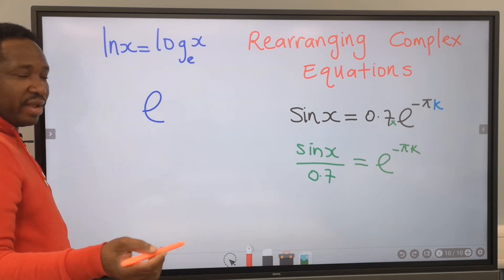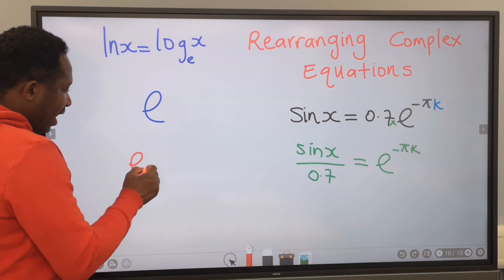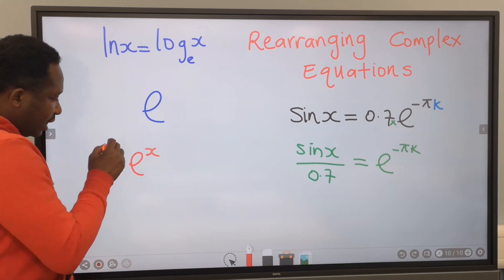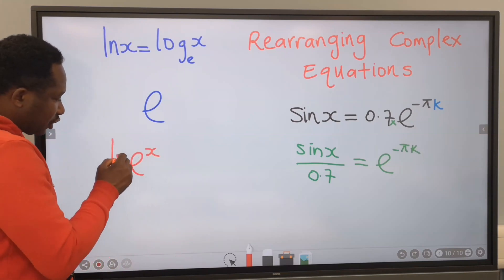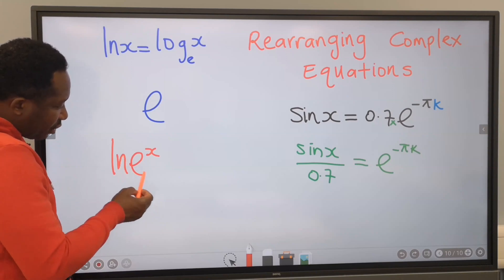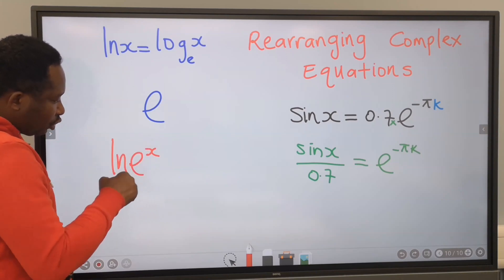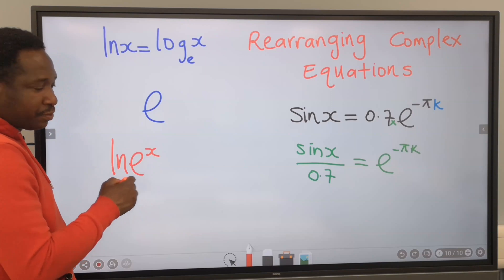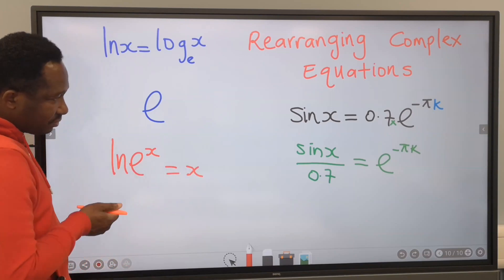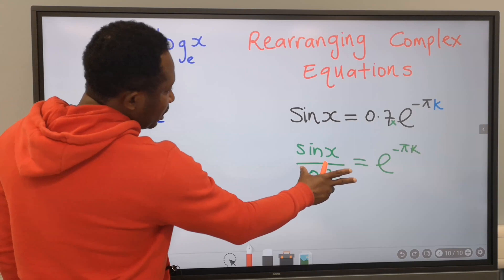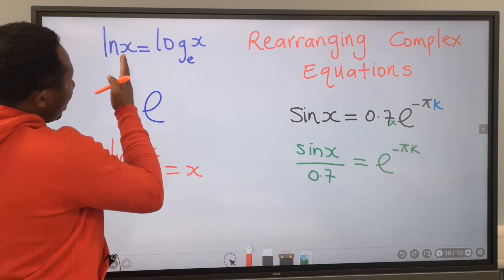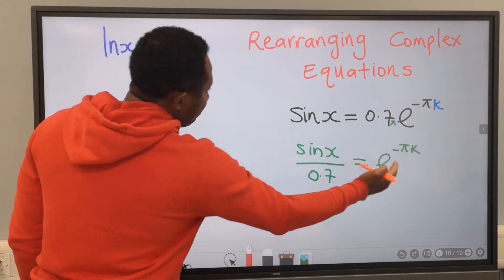For example, if I have exponential x and I introduce the natural log, the natural log placed very close to exponential neutralizes exponential, leaving you with just x. What we're going to do in this equation is to take the natural log of both sides.